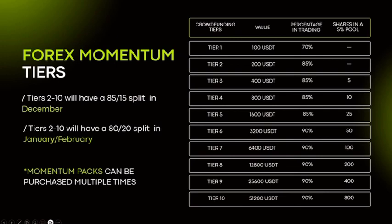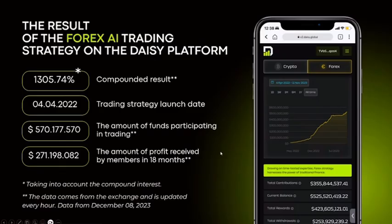Starting with tier two, you'll be able to buy a momentum pack. First you need to buy the regular tier two, which enables you to purchase the momentum pack, where 85% goes into trading instead of 70%. Equity shares also start with tier three. The 85/15 split will change in January and February to 80/20, so December is still your opportunity to get a momentum pack at 85%. Momentum packs can be purchased multiple times — there is an unlimited number available.